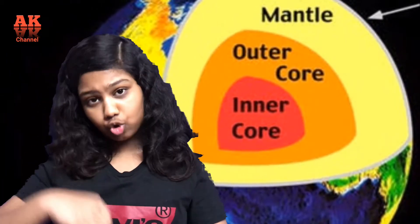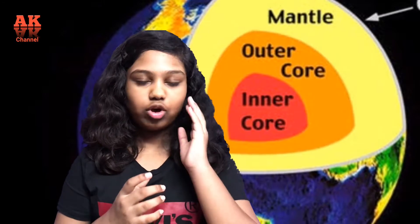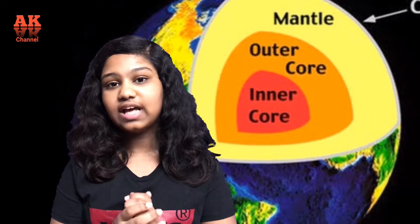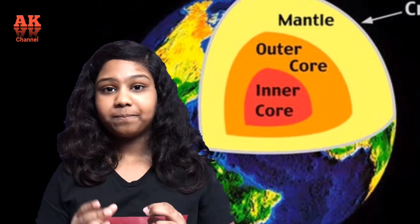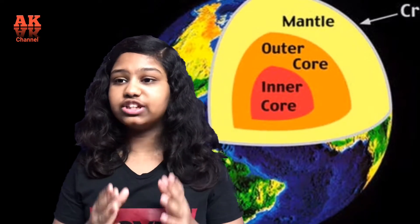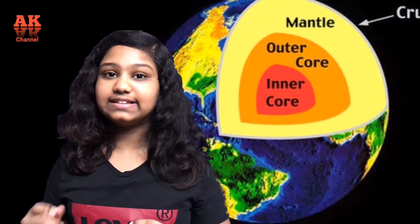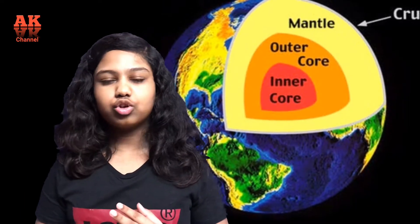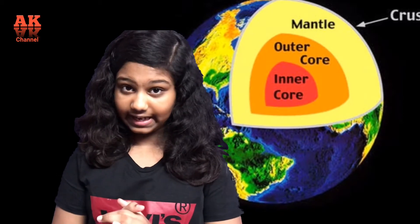The crust: if the Earth were reduced to the size of an apple, the crust would be like its peel. It has an average thickness of 40 kilometers — thickest under the continents at 70 kilometers, and thinnest under the oceans at just 8 kilometers. Aluminum, oxygen and other components make up the crust. The crust and the mantle are divided by a boundary known as the Mohorovičić discontinuity, named after a Croatian scientist.